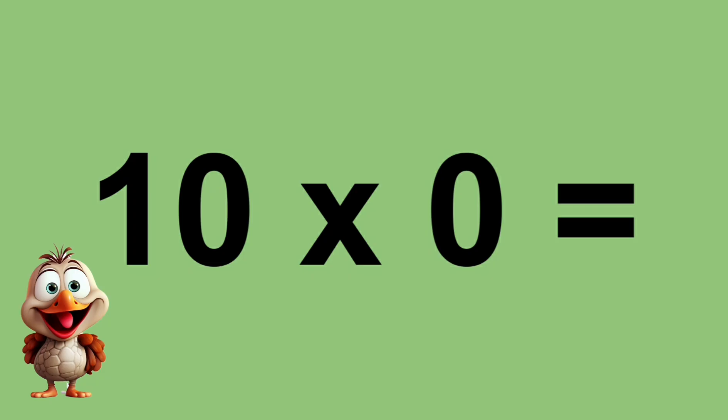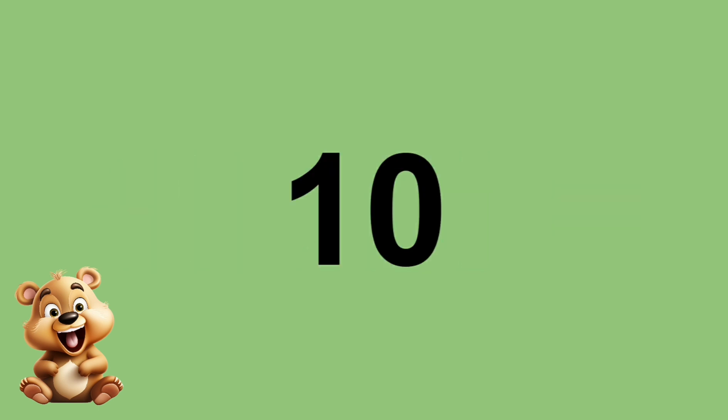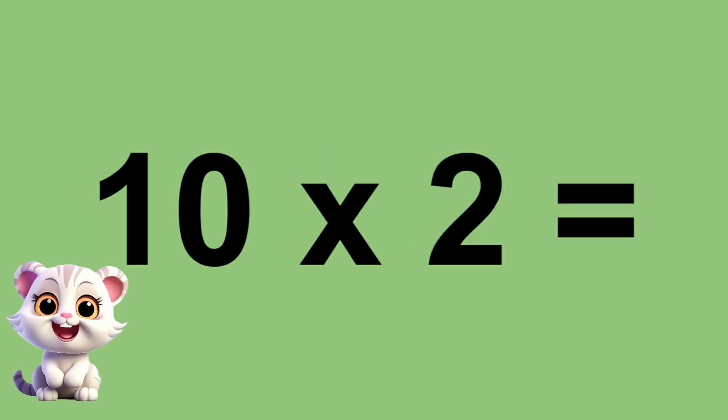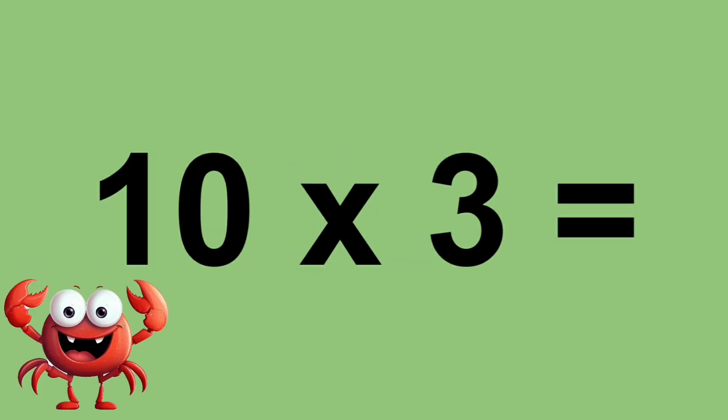Ten times zero equals zero. Ten times one equals ten. Ten times two equals twenty. Ten times three equals thirty.